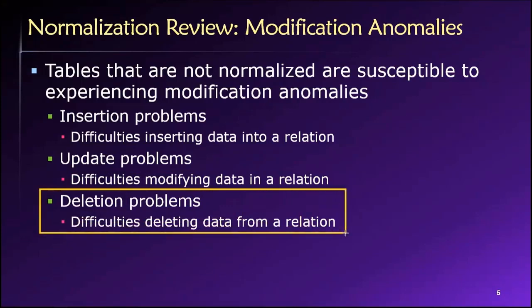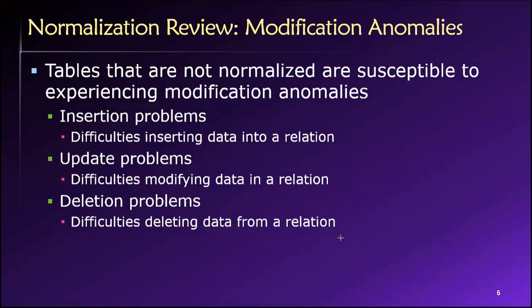In a fully normalized design, each piece of information about each instance of an entity is stored only in one place in the database. We don't have to worry about duplicate copies we need to find and update to maintain overall accuracy. And we don't have to worry about deletion problems because each row in a table represents just one instance of that thing — be it a product, supplier, customer, employee, department, or order. Our design protects us from these kinds of anomalies in a fully normalized solution.